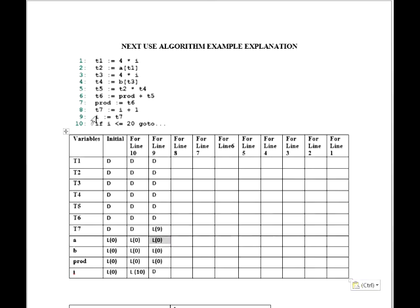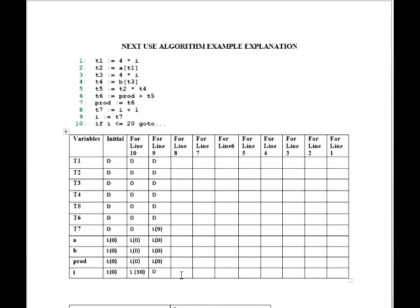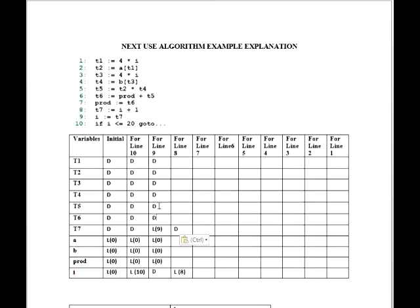Now go to line number 8. At line number 8, variable I is live and T7 is dead. So I is live at line number 8, and we put a D on T7 marking it dead. The rest of the values will be the same as line number 9.